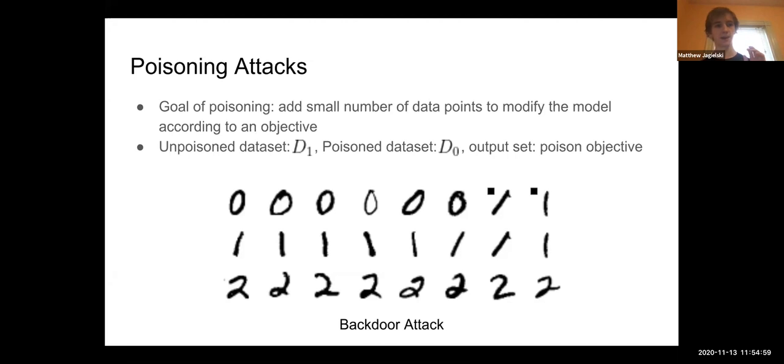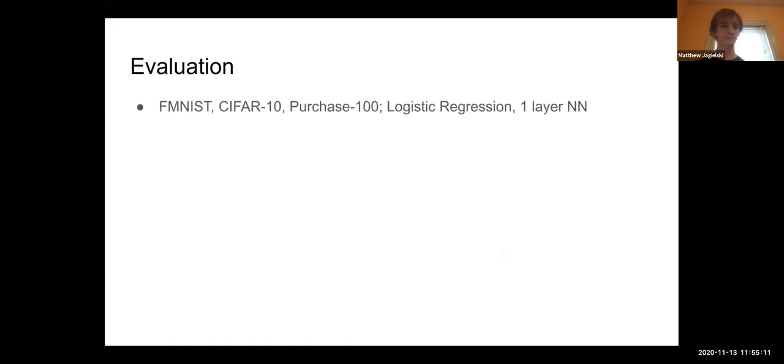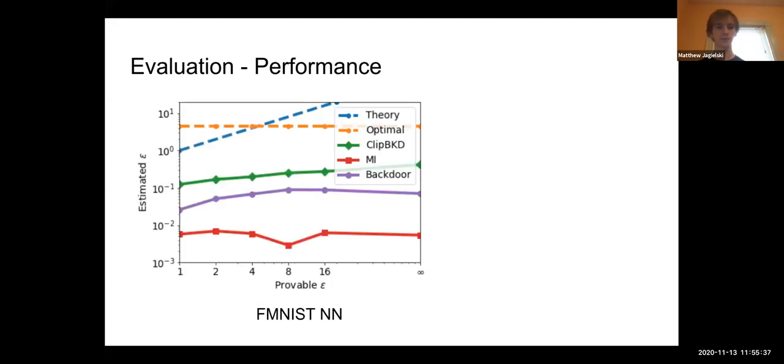We actually find that this approach doesn't work super well on DPSGD. It does something pretty nice, but we also show how to improve it using a new technique. I want to talk a bit about evaluation now. We evaluated on three standard datasets: Fashion MNIST, CIFAR-10, and Purchase-100. We used two models each: logistic regression and a one-layer neural network. To be clear, CIFAR-10 standard private training uses a pre-trained model, so logistic regression and one-layer neural network here are on top of that pre-trained model.